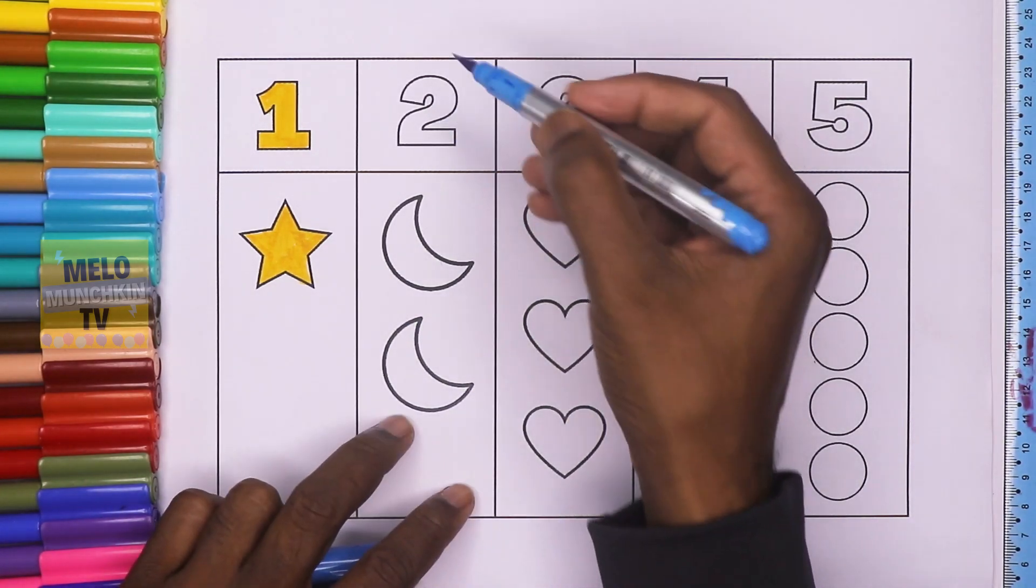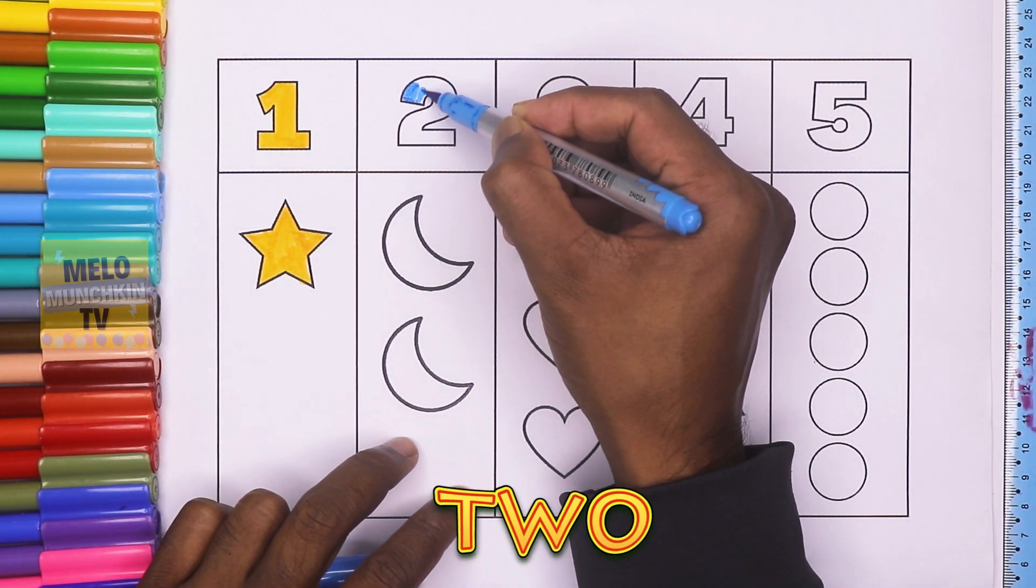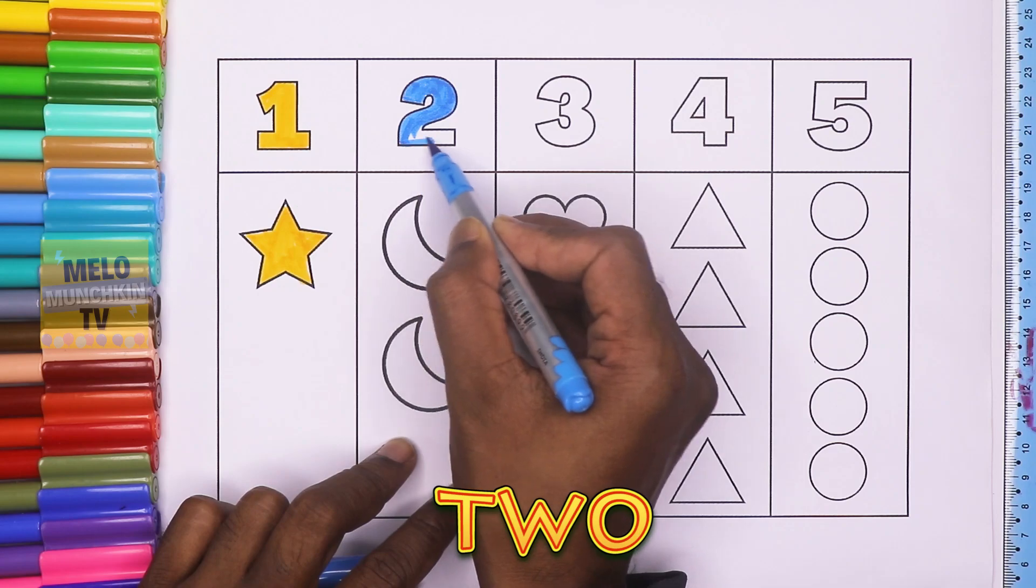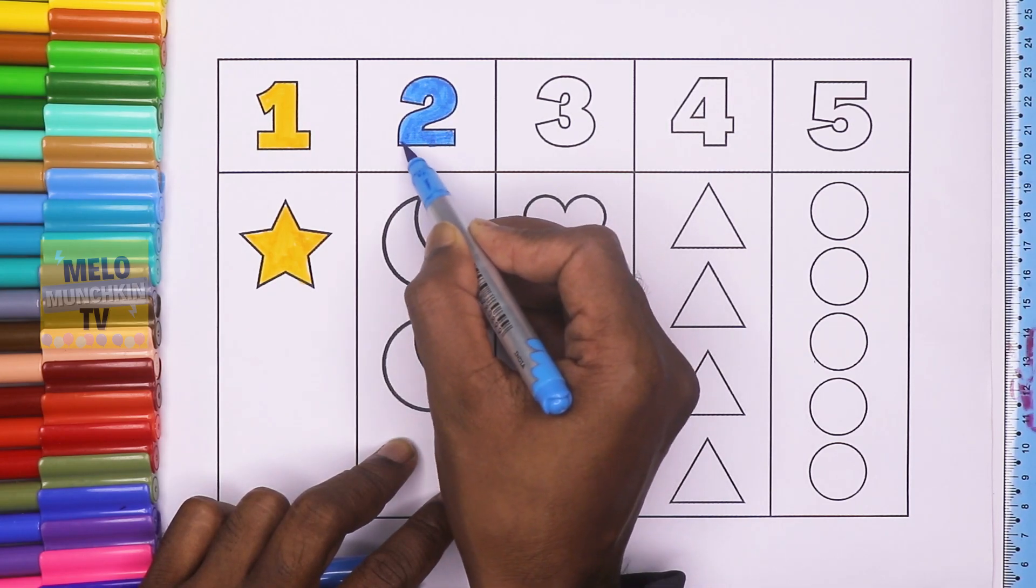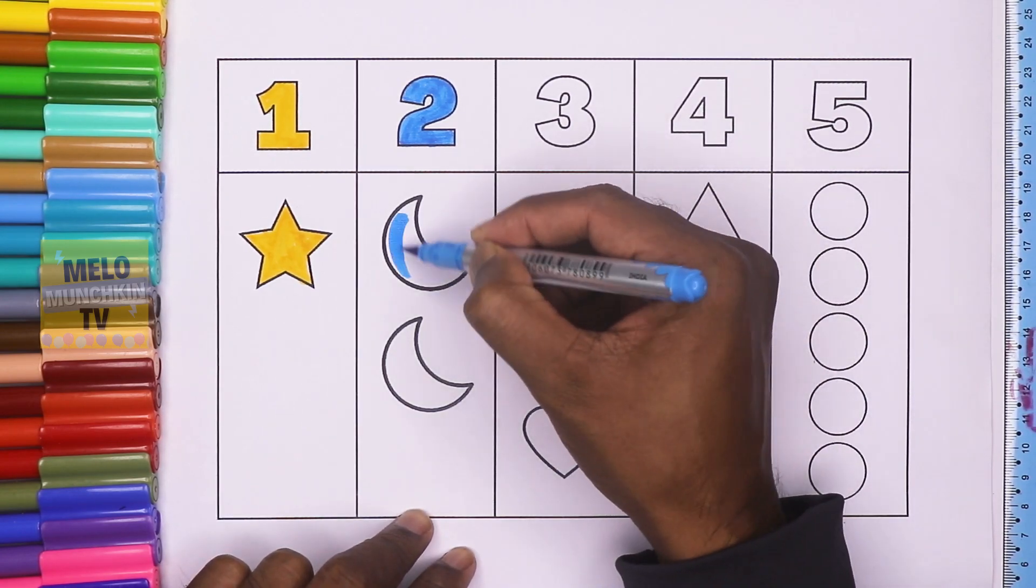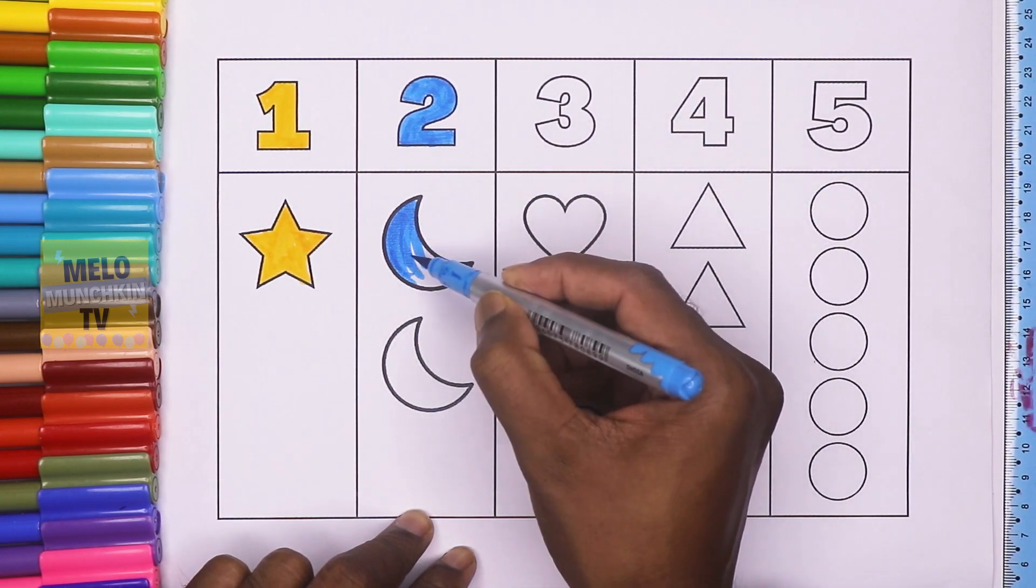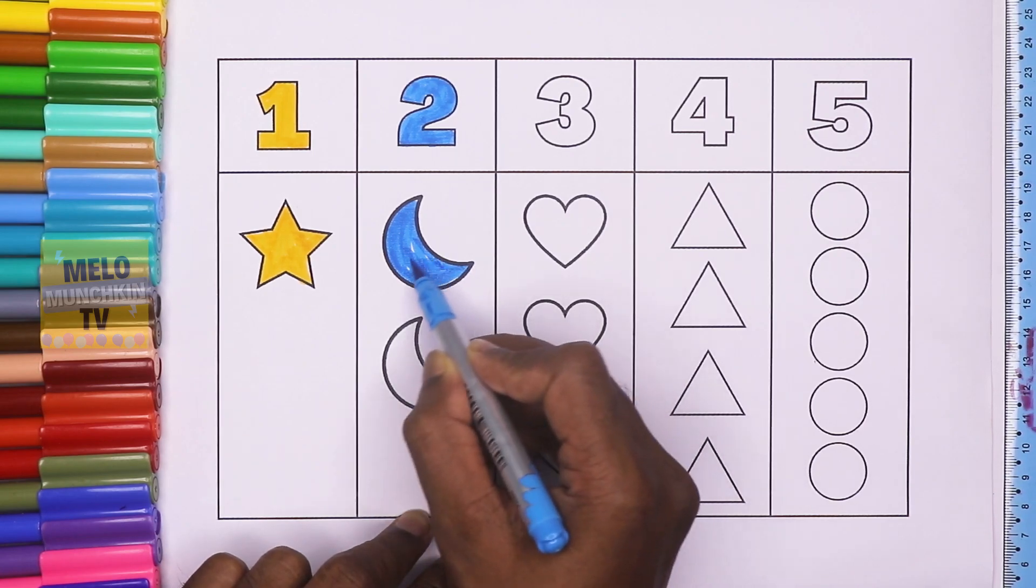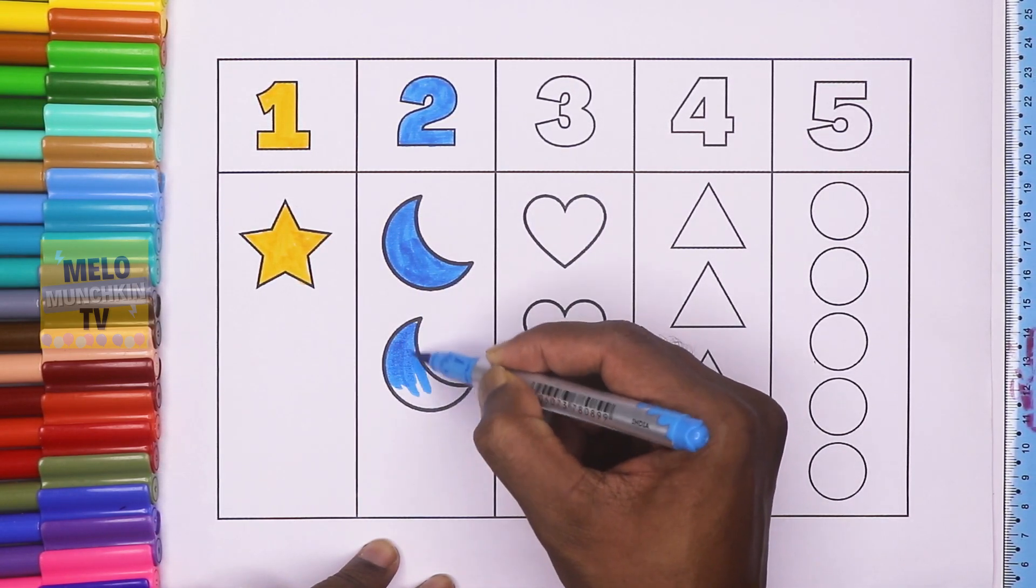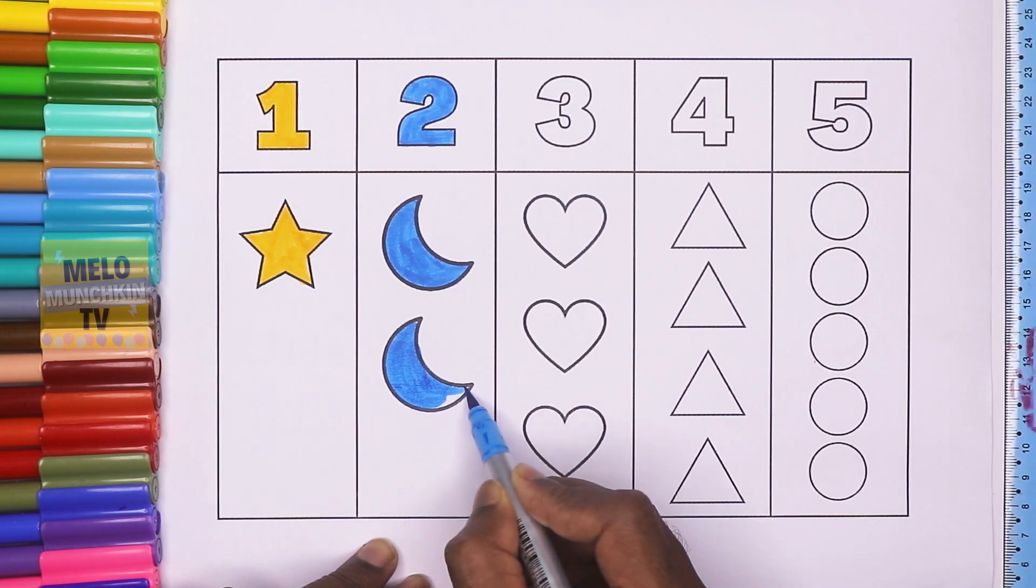Blue color. 2, T, W, O. 2. 2, T, W, O. Blue color. 2 crescent. The shape is crescent. The shape is crescent. This is 1 and 2. 2 crescent.